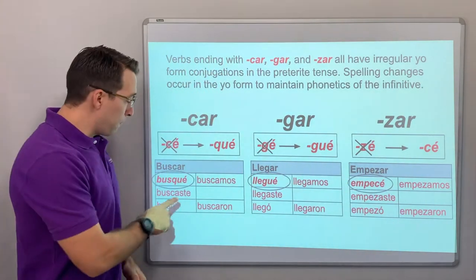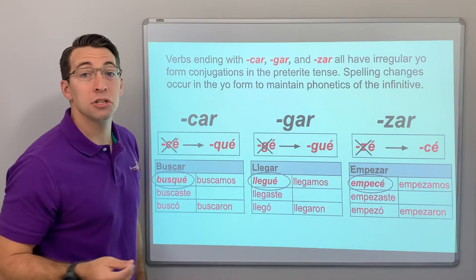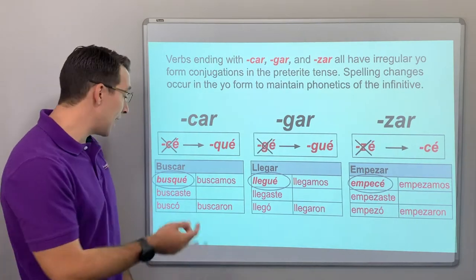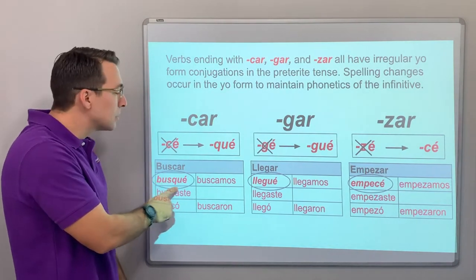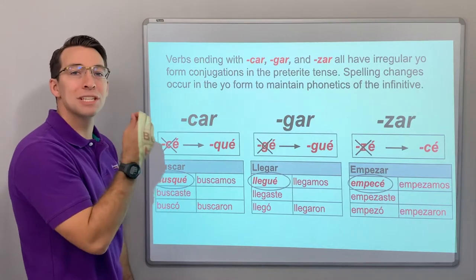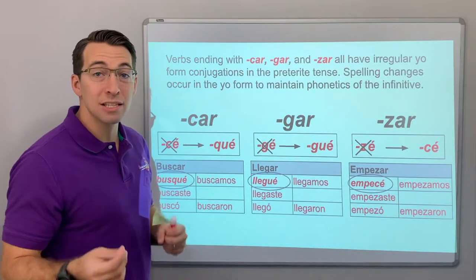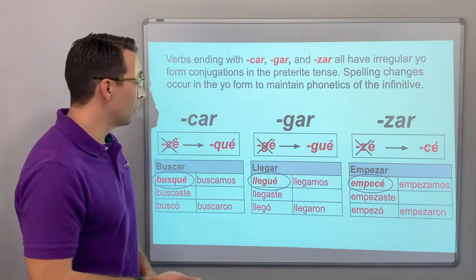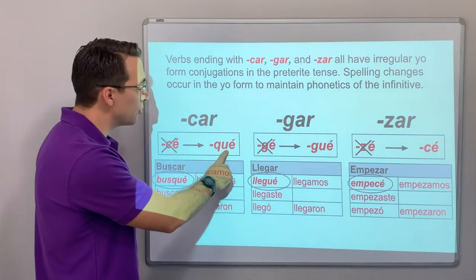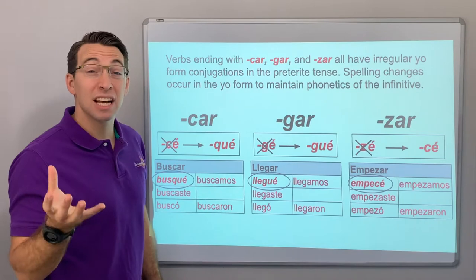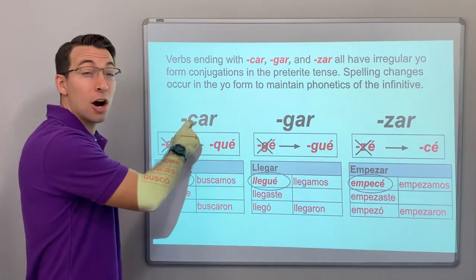If you follow C with an E, it changes the sound. We don't want to say 'yo busse.' No — the verb is buscar, with a K-K-K sound. So we change the spelling from C-E to Q-U-E, because that gives us the K sound from the infinitive ending -car.